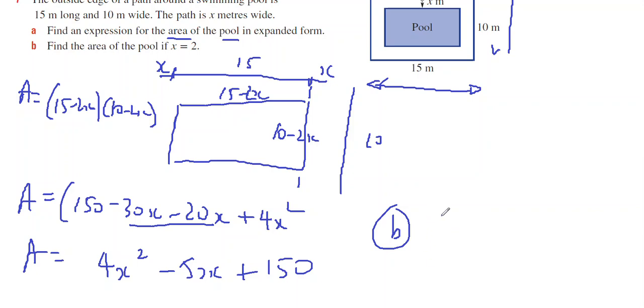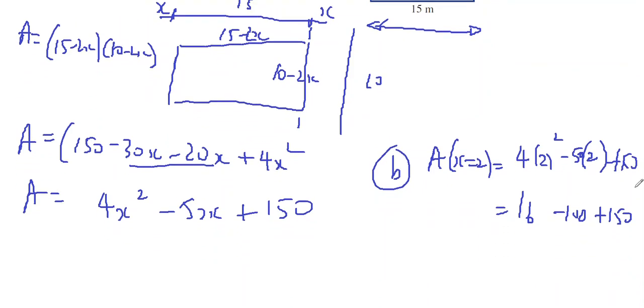Part b says find the area of the pool when x equals 2. So the area when x equals 2 will be 4 times 2 squared minus 50 times 2 plus 150. That's 16 minus 100 plus 150, which is 50 plus 16, which is 66 units squared.